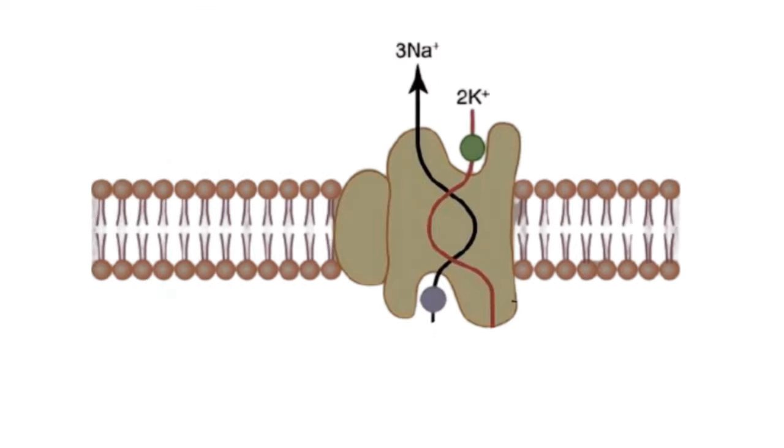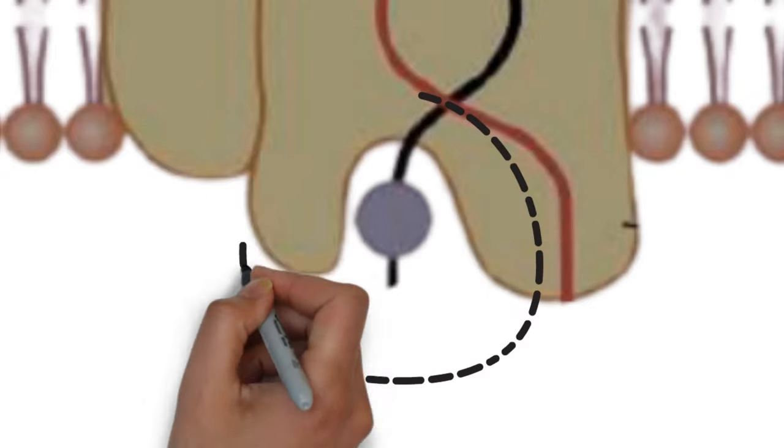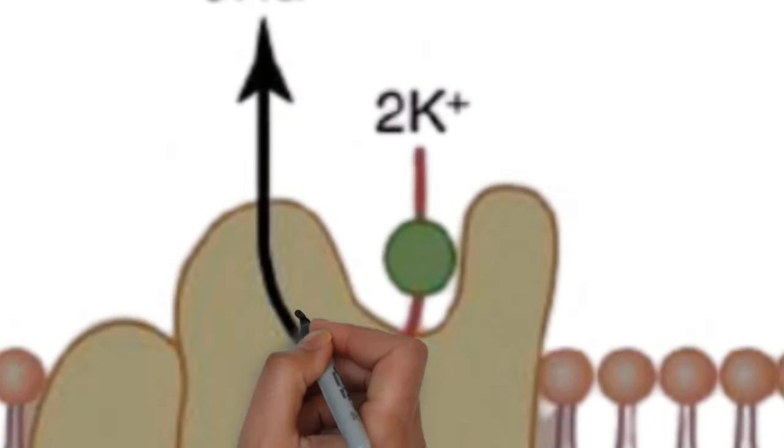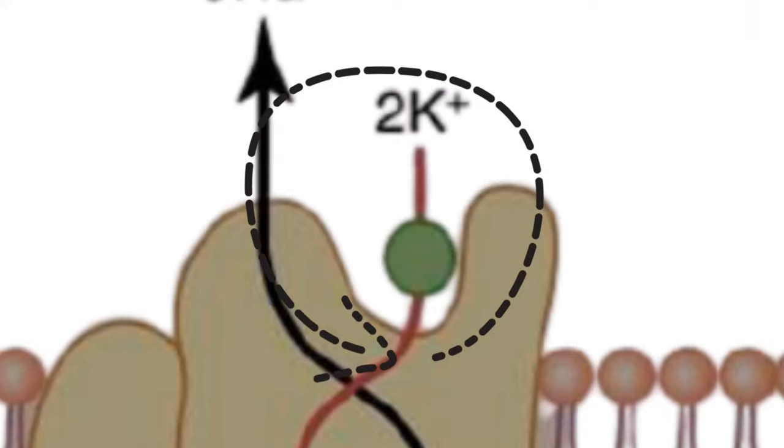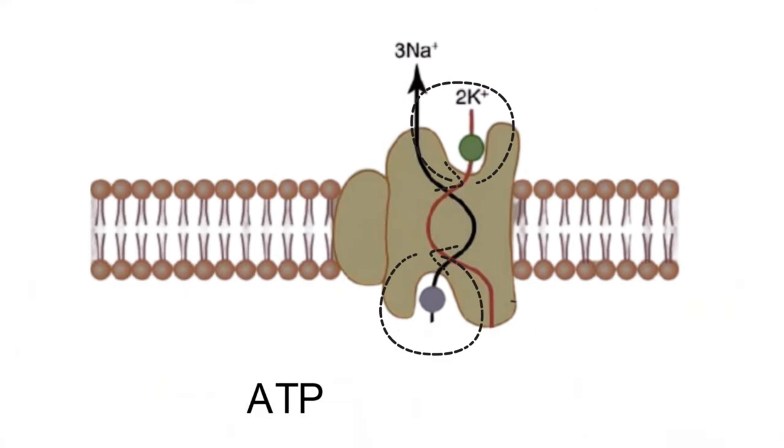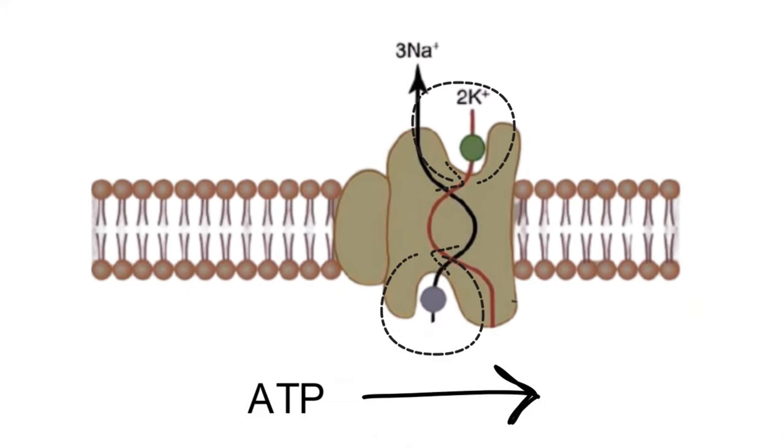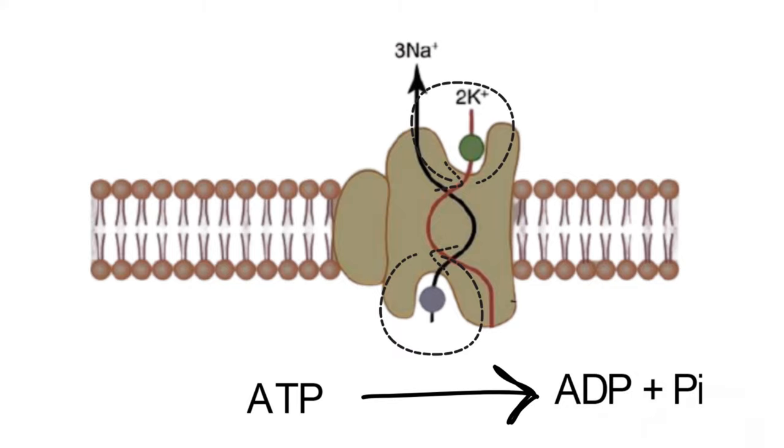As you can see, three sodium ions attach on the inner side of the protein and two potassium ions attach to the exterior. Then the ATPase converts ATP into ADP and a phosphate bond is broken. This phosphate bond is a high energy bond which helps the pump perform its function.